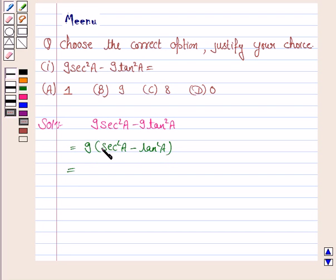Now we know that secant square theta minus tan square theta is 1. It is 9 into 1. So this is equal to 9.